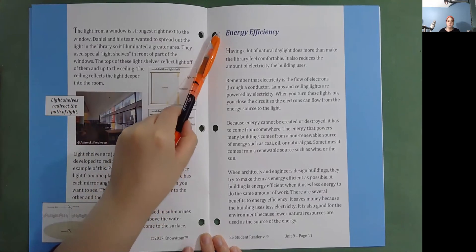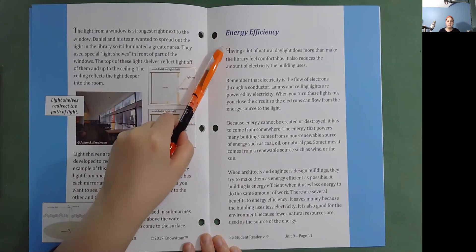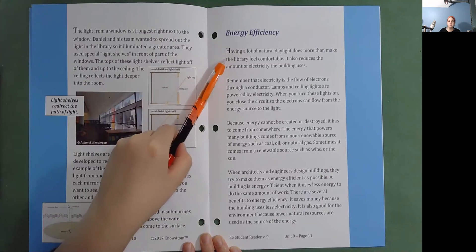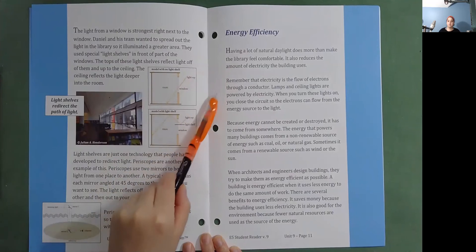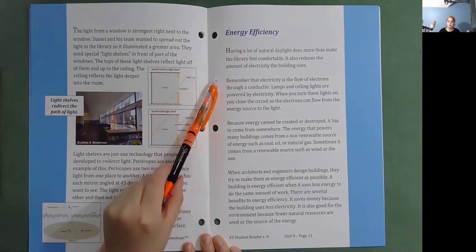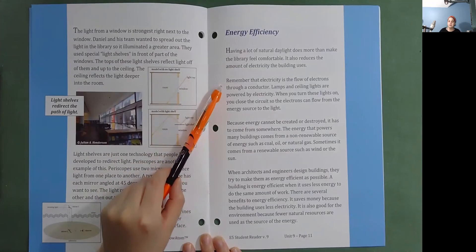Energy efficiency. Having a lot of natural daylight does more than make the library feel comfortable. It also reduces the amount of electricity the building uses. Remember that electricity is the flow of electrons through a conductor. Lamps and ceiling lights are powered by electricity.